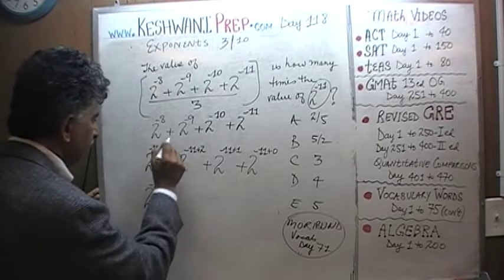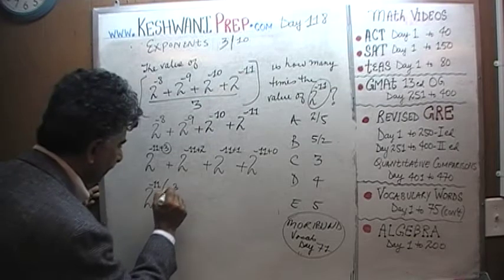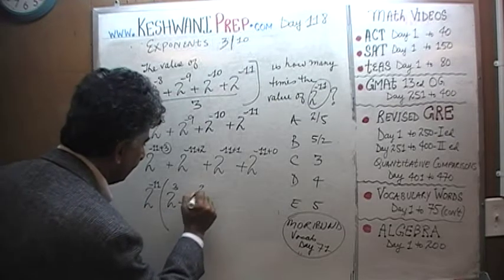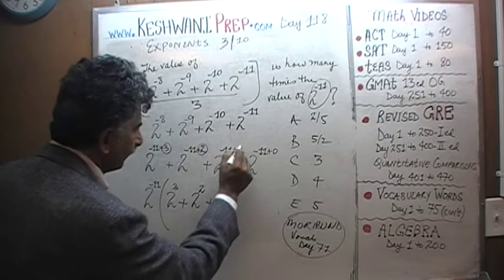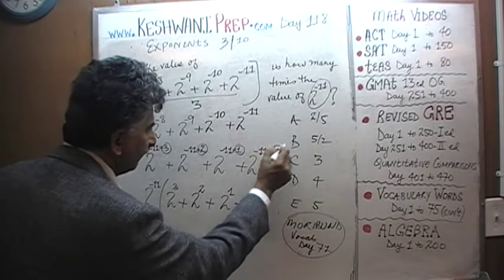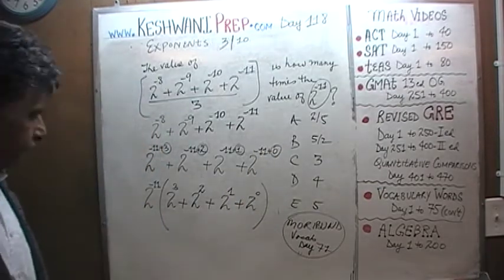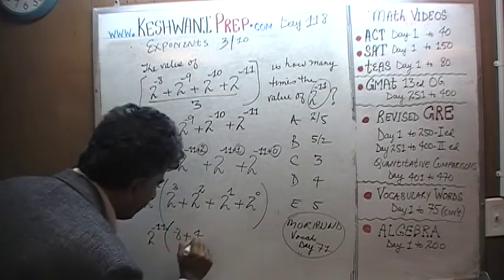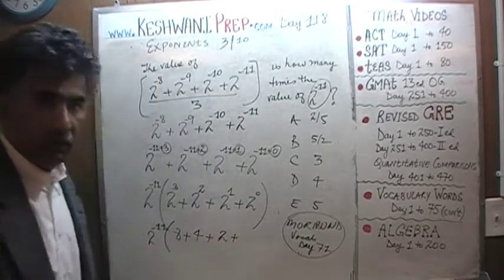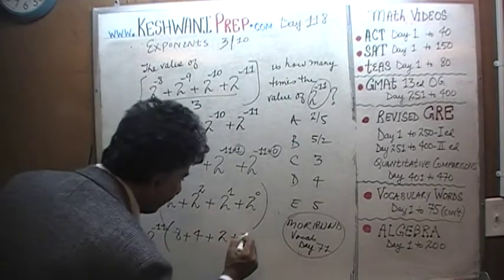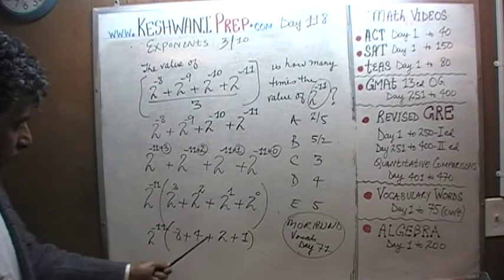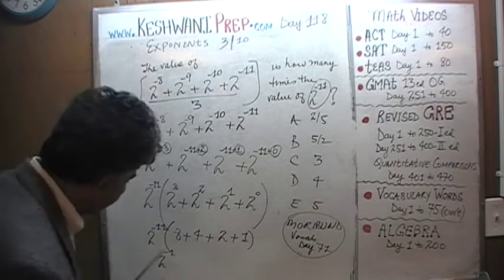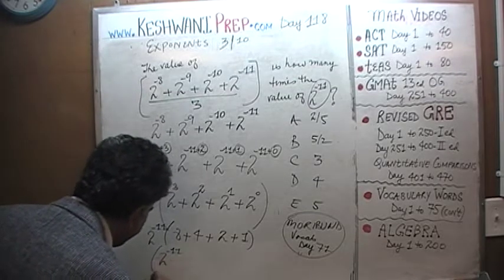If we do that, we are left with 2 raised to 3, plus 2 raised to 2, plus 2 raised to 1, plus 2 raised to 0. That is 8 plus 4 plus 2 plus 1. Any number raised to the power of 0 is just 1. So it boils down to 2 raised to negative 11 times 15.